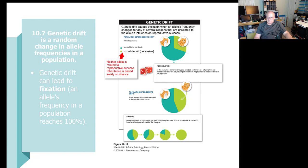Genetic drift is a random change in the allele frequencies in a population. If it's advantageous, this drift can lead to fixation — where an allele's frequency in a population ultimately reaches 100%. You can see fixation occurring in the diagram: it starts and then unless you have those characteristics, it's not going to happen for you. That's what fixation is — the ability to be very competitive.